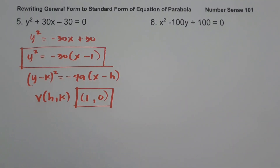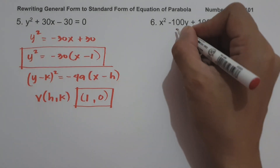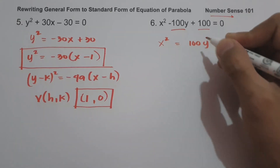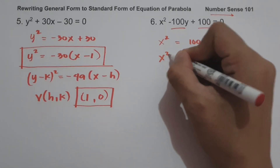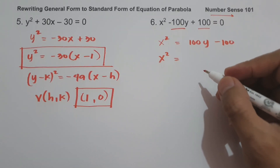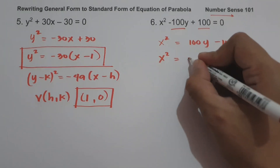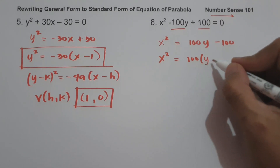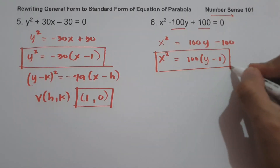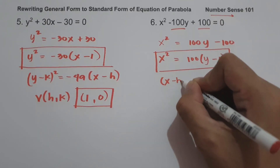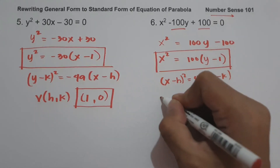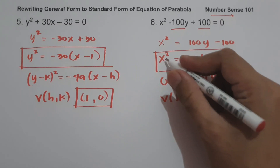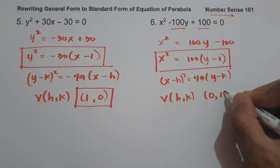On number 6, we have x² - 100y + 100 = 0. Moving -100y and 100 to the other side: x² = 100y - 100. The greatest common factor between 100y and -100 is 100. Dividing: 100y ÷ 100 = y, and -100 ÷ 100 = -1. So the standard form is x² = 100(y - 1). This is in the form (x - h)² = 4a(y - k). The vertex: h is 0 (no h term) and k is +1. The vertex is (0, 1).